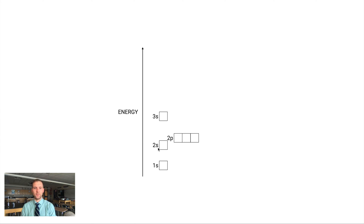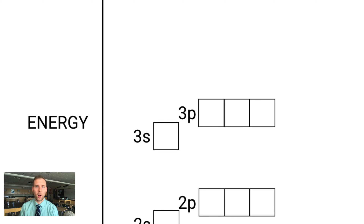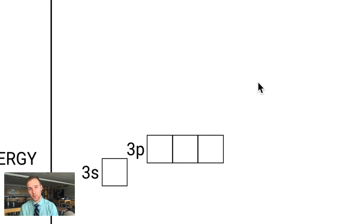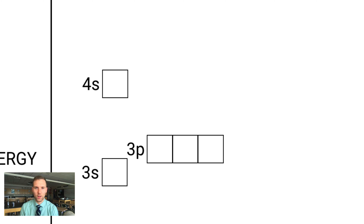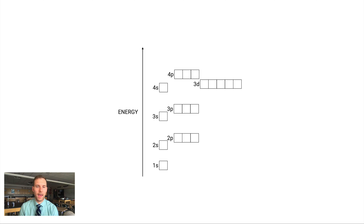After filling 2p, we move to the third shell — 3s and 3p — and it's business as usual so far. But something strange happens: you'd think 3d would come next, but it's actually slightly less energy to start filling the 4s subshell than to fill 3d. So we fill 4s first, then go back and fill 3d. After that, we continue with 4p, then 5s, and so on.